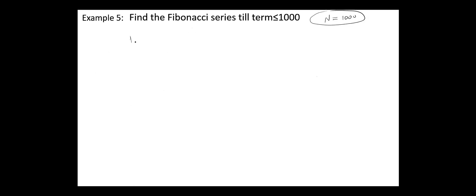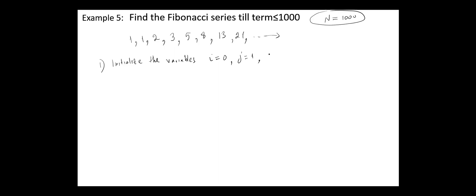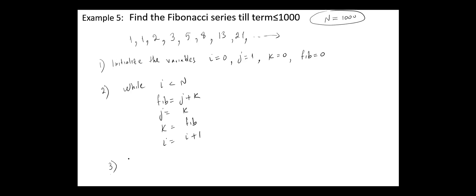The next example is to calculate the Fibonacci series till term 1000. The Fibonacci series is 1, 1, and every next element is computed by summing the two previous elements — so we have 2, then 1 plus 2 = 3, 2 plus 3 = 5, 8, 13, 21, etc. The algorithm steps are as follows: we initialize the variables i to 0, j to 1, k to 0, and Fib to 0. While i is less than n, we perform: Fib equals j plus k, j equals k, k equals Fib, and we increment i by 1. So we continue looping until i becomes greater than n.